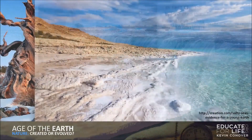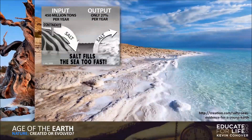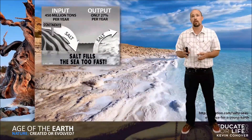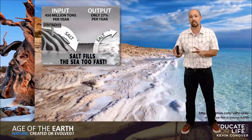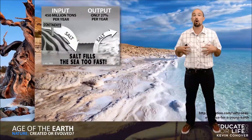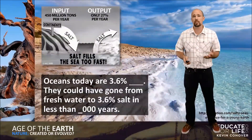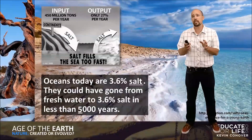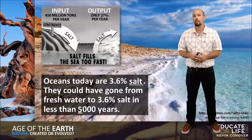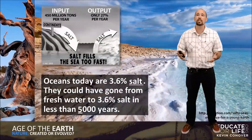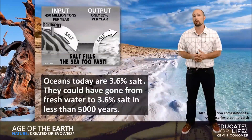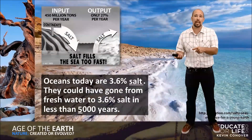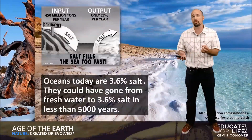Another limiting factor is the salt in the ocean — 450 million tons of salt are added to the ocean every year through runoff from rivers, rain, and other water sources. Only 27 percent of that is removed through tectonic activity. This means the upper limit for the age of the oceans is 62 million years. Oceans today are 3.6 percent salt; they could have gone from fresh water to 3.6 percent salt in less than 5,000 years. The max limit would be 62 million years, and that doesn't work for evolutionary theory since evolutionists say the first single-celled organism came into existence around 3.6 to 3.2 billion years ago.